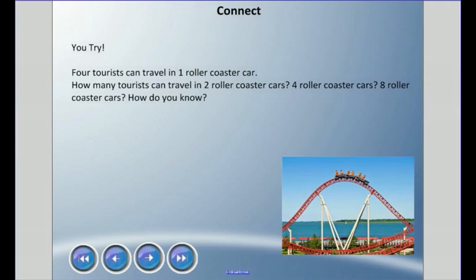The question says 4 tourists can travel in one car. I can double, so I have 4 times 2. 1 times 2 is 2, and 4 times 2 is 8. This doubled as well. So I know that in 2 roller coaster cars, 8 tourists can go.